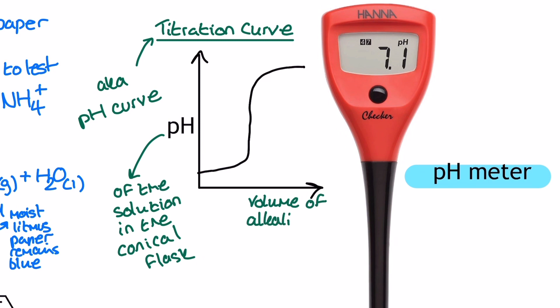The titration curves, like the one you can see on screen now, have a vertical section to them, sometimes just described as a steep section. And using a pH meter allows you to identify these. The midsection of this vertical section of the curve is described as the equivalence point. When selecting an indicator for a titration, it's important to make sure that the pH range of the indicator matches this vertical section of the curve.